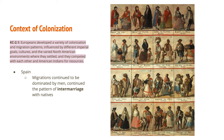The first key concept says: Europeans developed a variety of colonization and migration patterns influenced by different imperial goals, cultures, and the varied North American environments where they settled, and they competed with each other and American Indians for resources. We're going to go individually by each European power that was in the New World.